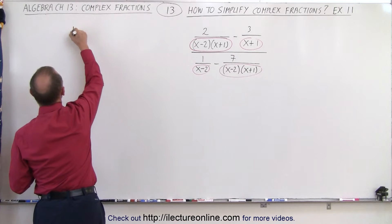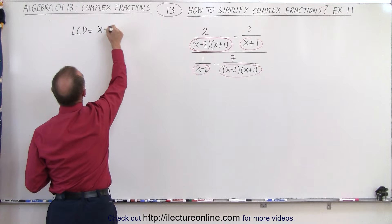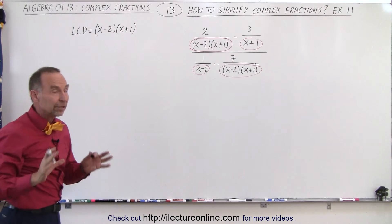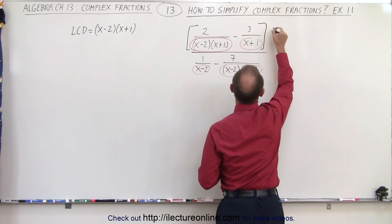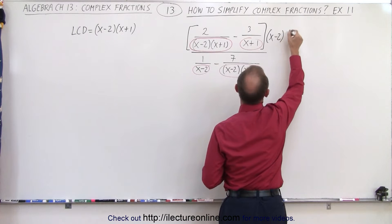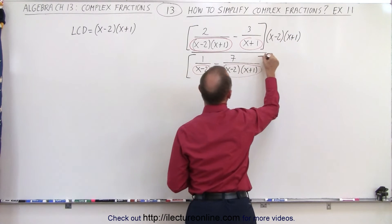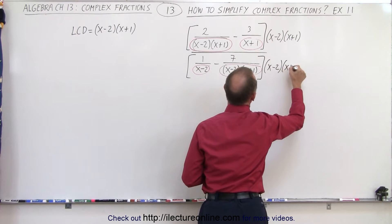So let's write that down. The LCD is x minus 2 times x plus 1. So now we're going to multiply the numerator and the denominator by that lowest common denominator. So multiply this times x minus 2 times x plus 1. And the same with the denominator here, multiply times x minus 2 and x plus 1.